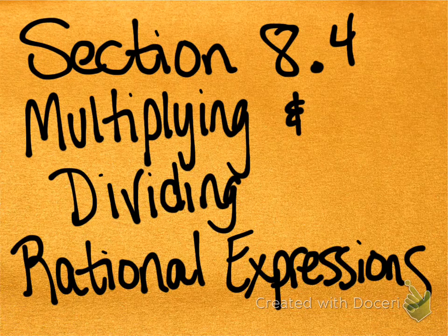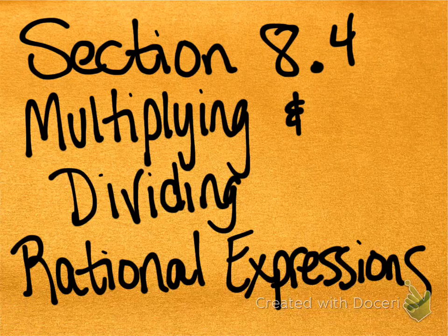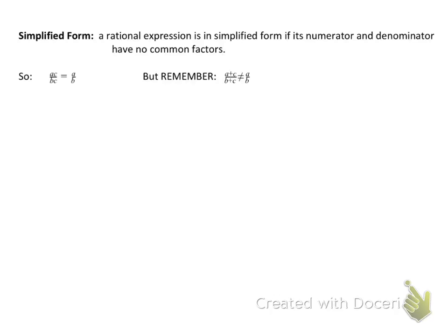Section 8.4: Multiplying and Dividing Rational Expressions. A rational expression is in simplified form if its numerator and denominator have no common factors.